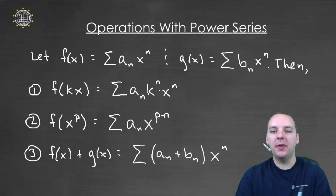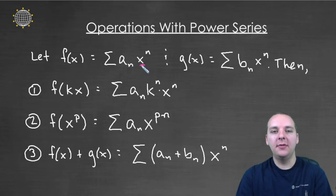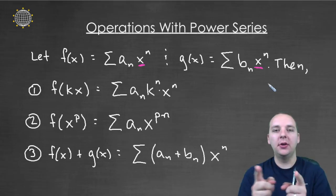And the last and final property is what happens if you have one power series added to another power series. As long as the index values start at the same place and they have the same variable terms x^n, then as you're adding these terms you'll see every term in f matches a term with g. In other words, you have lots of like terms.